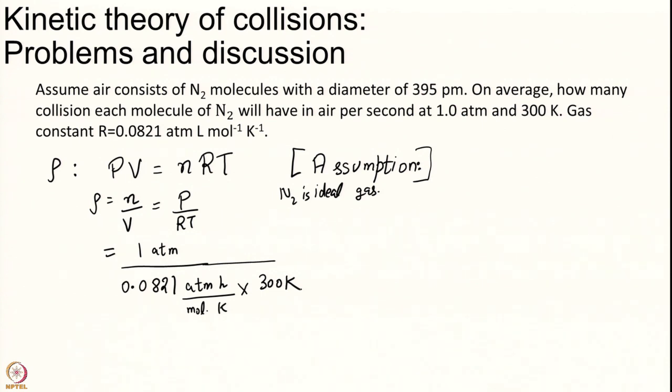R I have given already in appropriate units mol kelvin into a temperature is 300 kelvin. What is the unit of rho I am looking at? Rho is density and density should be it is a number density. I want to cancel liters with meter cube. So I will have a 1000 liters in 1 meter cube and I will have 6.02 into 10 to the power of 23 per mole.